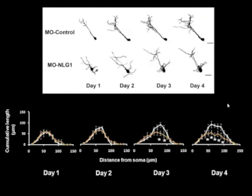Knocking down neoligand-1 also results in the formation of simple dendritic arbors over four days.